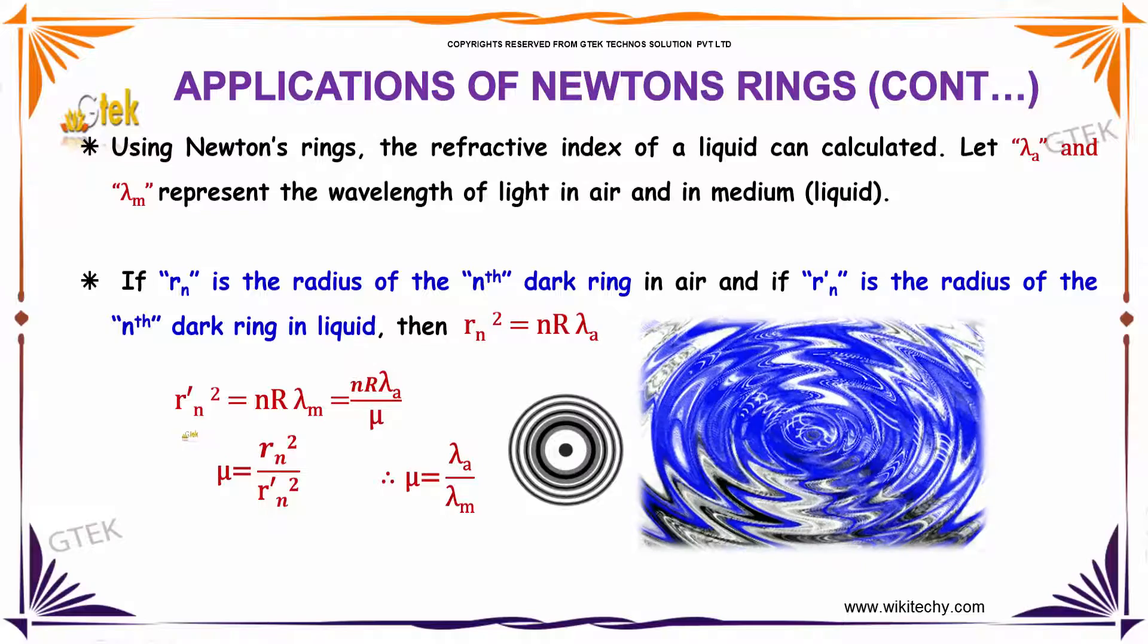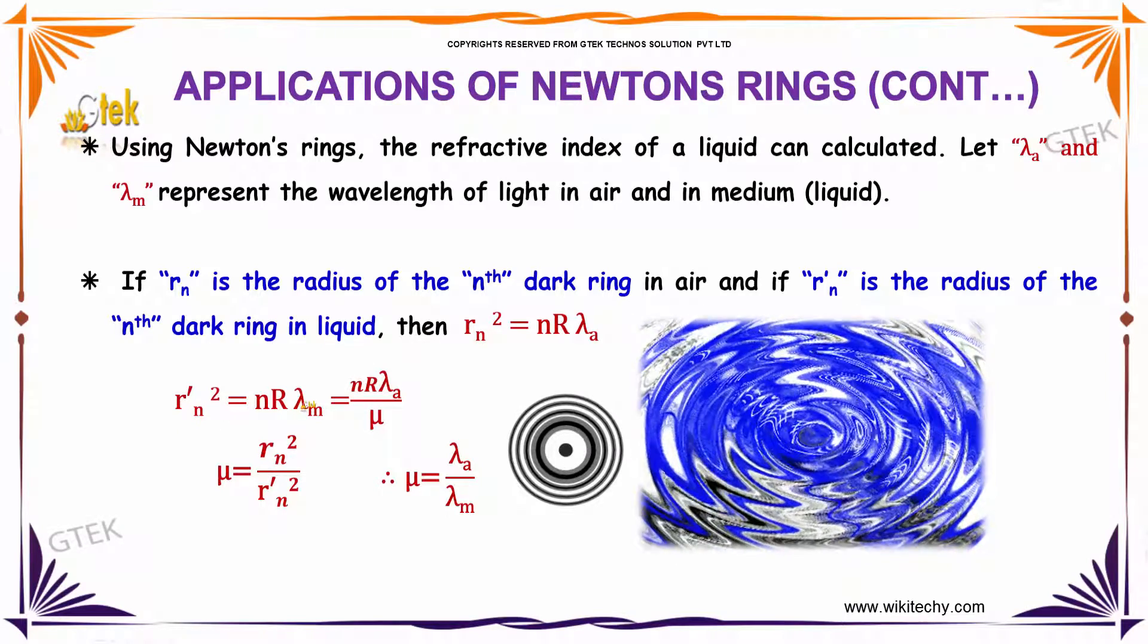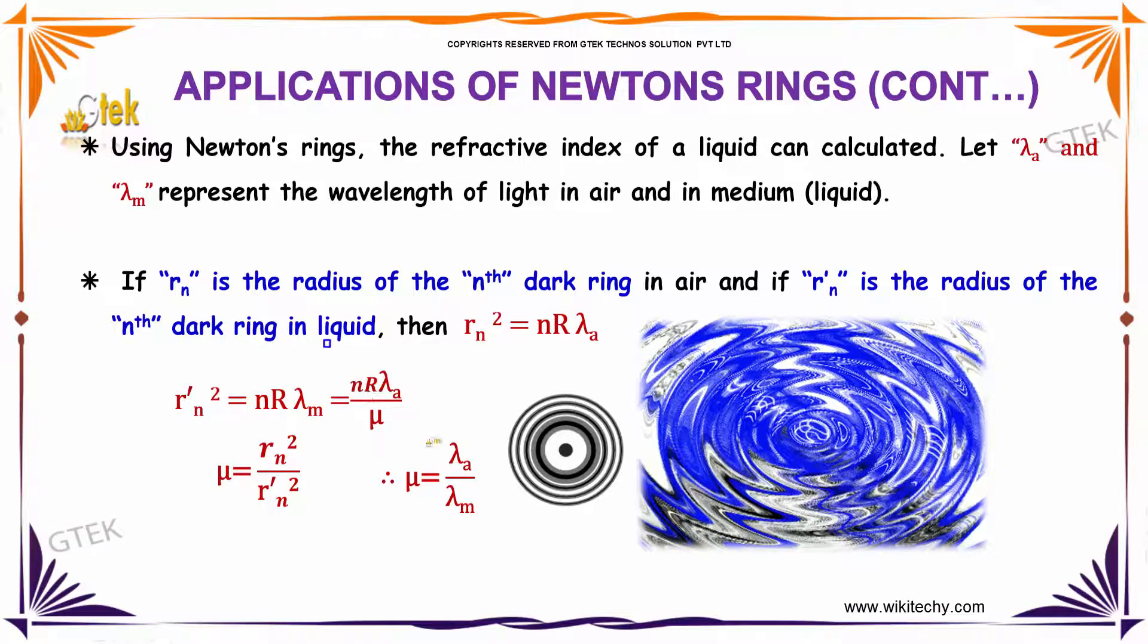Whereas r dash n square is equal to n into r lambda m, which is nothing but n r lambda a divided by mu. As mu is equal to lambda a divided by lambda m.